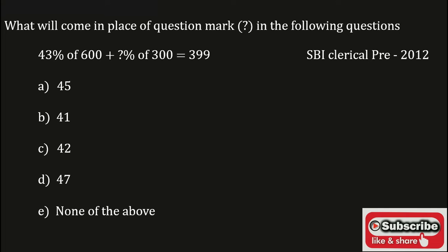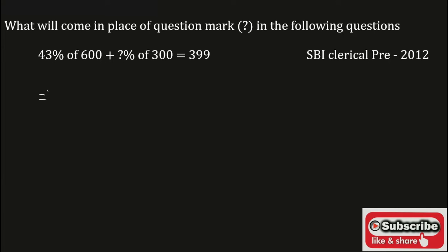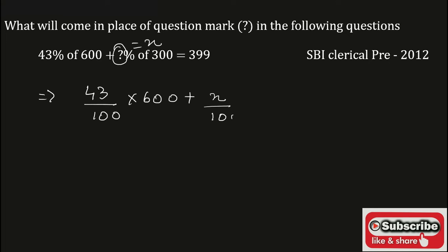See the given question: 43 percentage of 600 plus what percentage of 300 is equal to 399. Here 43 percent is 43 upon 100 into 600, plus — in the place of the question mark, consider it as x — x percentage is x upon 100 into 300.